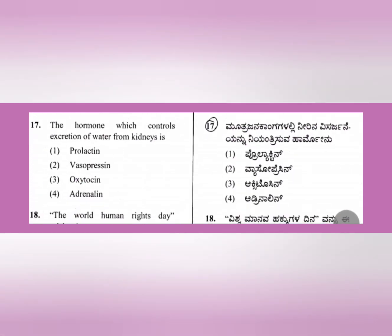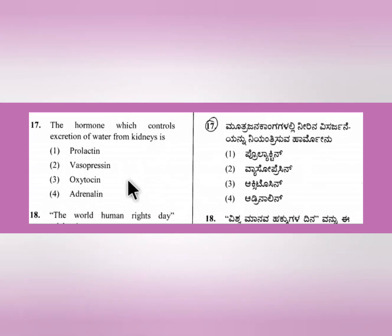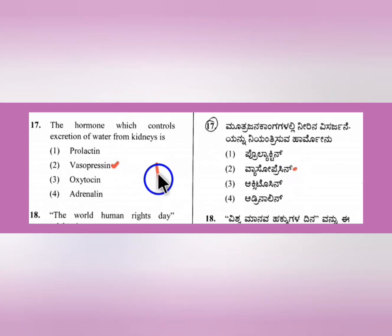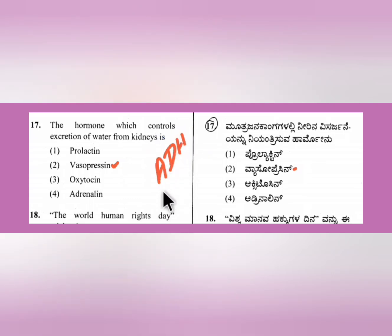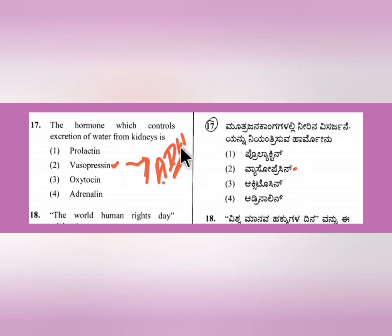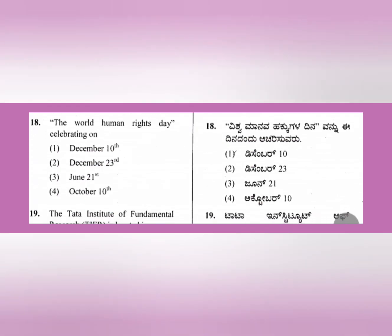Question 17: The hormone which controls excretion of water from the kidneys is vasopressin - option number 2. This is something you need to learn for general science.